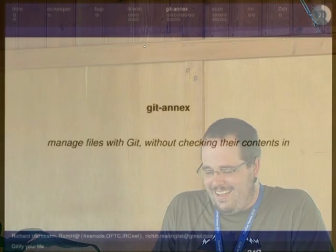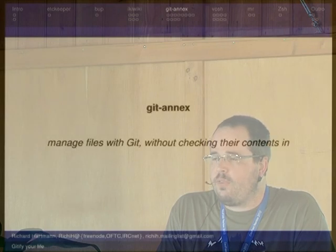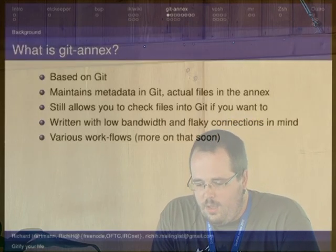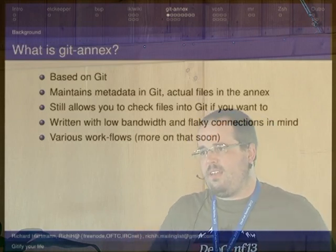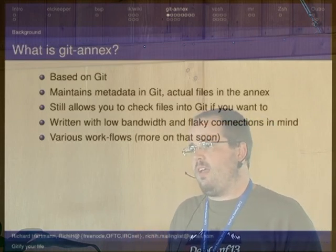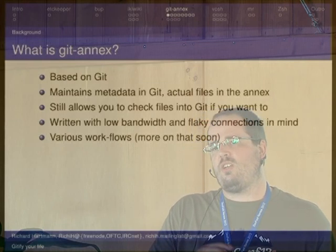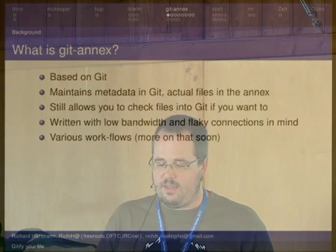Next up, git-annex — the beef. It's basically a tool to manage files with git without checking those files into git. That might sound counterintuitive. It maintains the metadata about files — location, file names, everything — within your git repository, but it doesn't actually maintain the file content within the git repository.